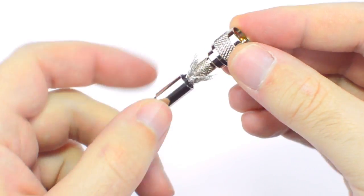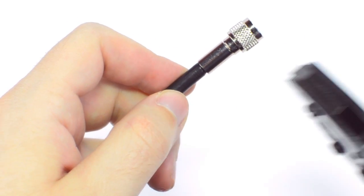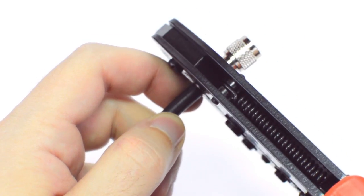Then slide up the ferrule to the base of the connector, folding the shield with it. Crimp the ferrule under the outer jacket to complete termination.